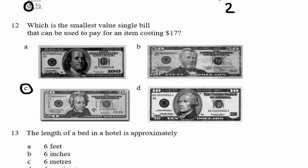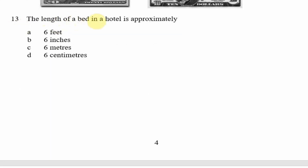Question 13: The length of a bed in a hotel is approximately 6 what? Six inches is pretty short. Six meters is too long. Six centimeters is very very short. So our answer is option A — 6 feet.